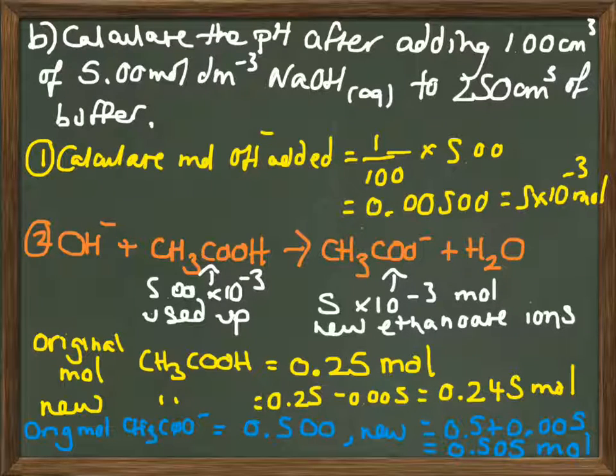We need to work out what the change is in our ethanoic acid molecules. Our original moles of ethanoic acid is 0.25 moles. Our new moles will be that minus 0.005 moles, so 0.245 moles. Our original moles of ethanoate ion was 0.5, and our new is going to be 0.5 plus 0.005 moles, so 0.505 moles. We've got our new moles.